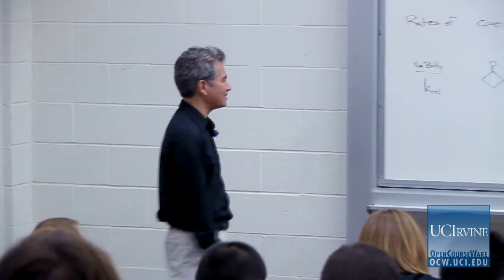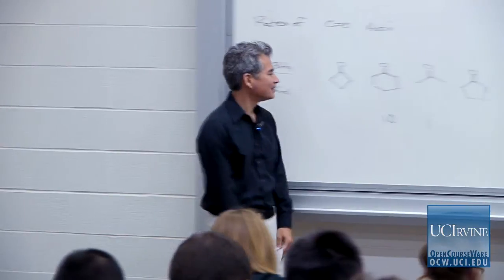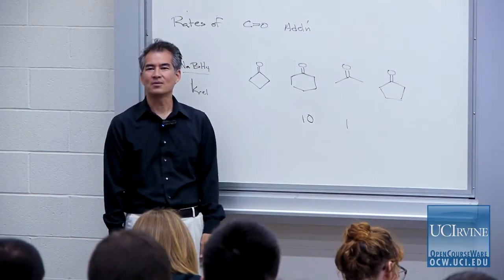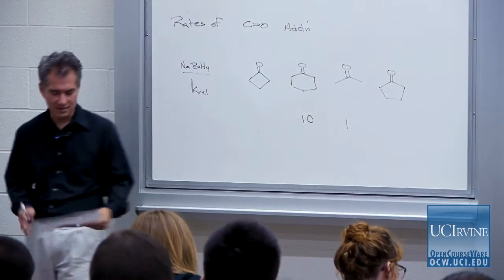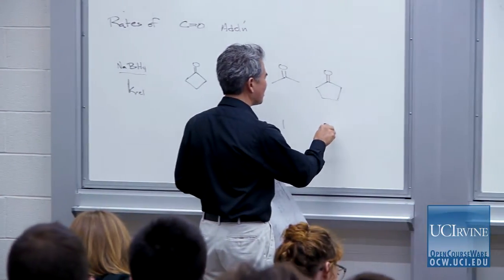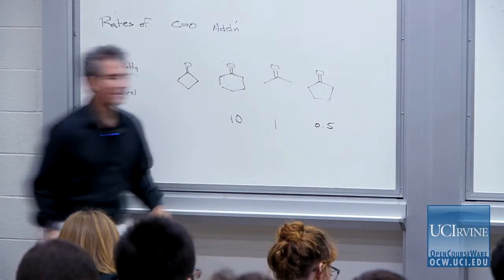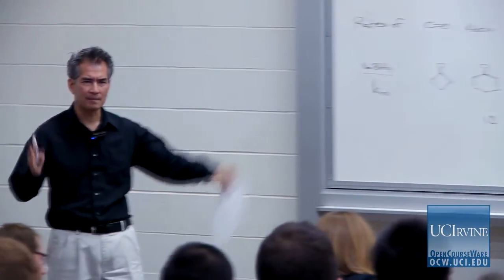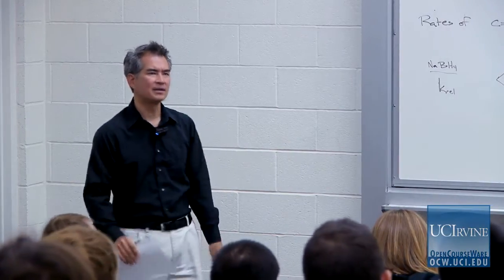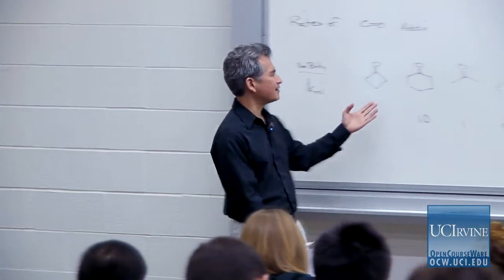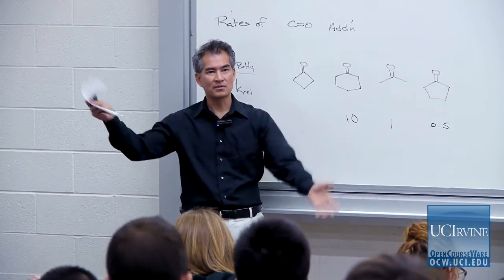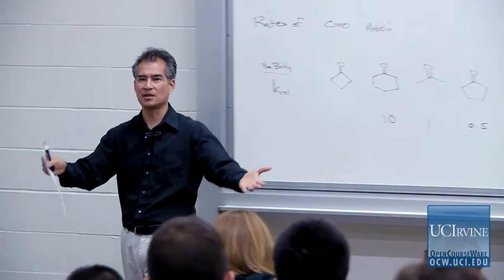Cyclohexanone looks pretty similar to acetone — it's not a steric effect. I don't think you could argue it's less hindered than acetone. Cyclopentanone is a little bit slower than cyclohexanone, but I don't think that difference is very meaningful. What's important is the comparison between cyclohexanone versus cyclopentanone. That's the kind of effect you can take advantage of when doing a selective reduction of one of two ketones in a molecule.